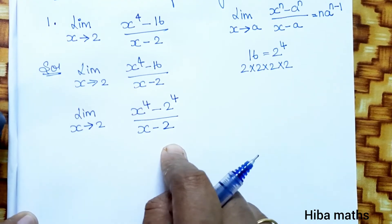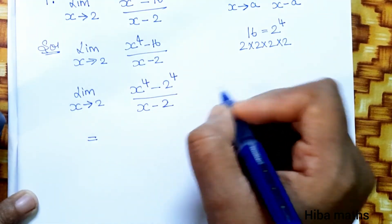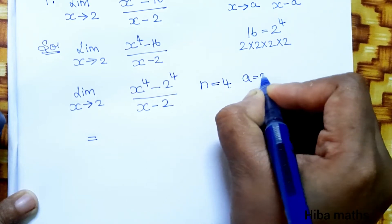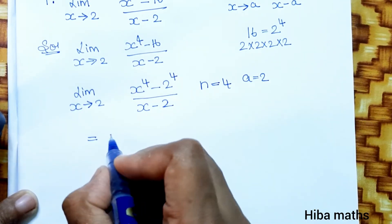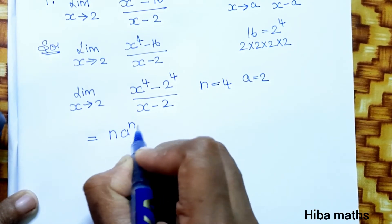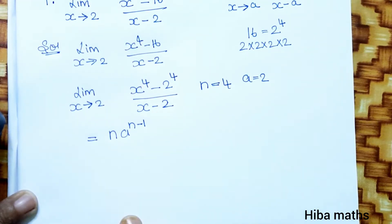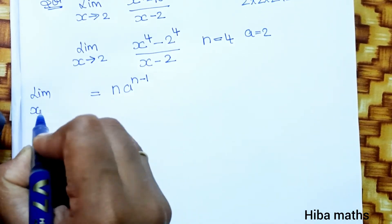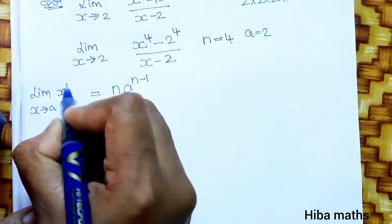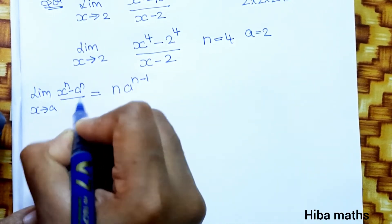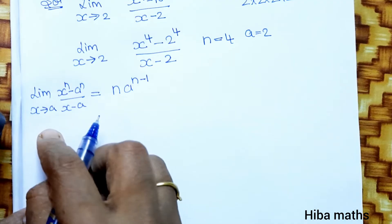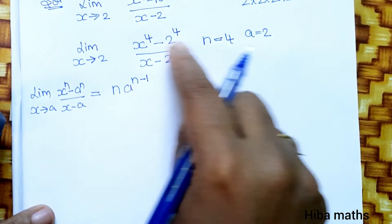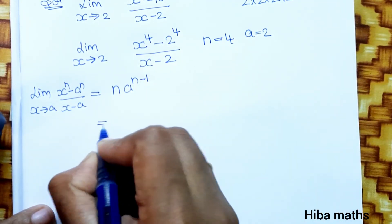Here, n equals 4 and a equals 2. This matches the standard format: limit x tends to a, x power n minus a power n divided by x minus a, which equals n into a power n minus 1. Now let's substitute the values n equals 4 and a equals 2.